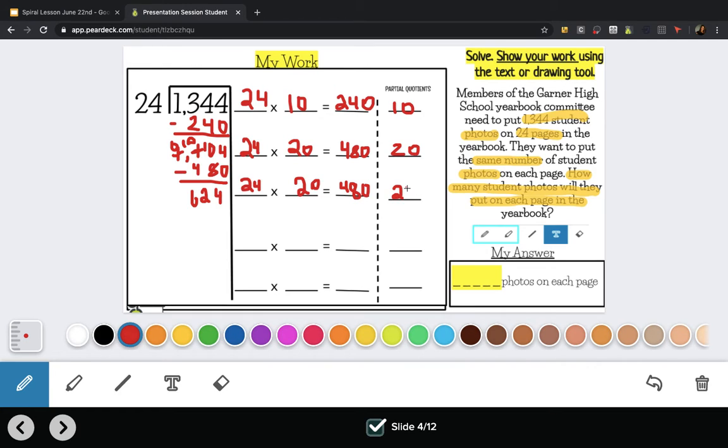Now that's another 480 photos. I'm gonna take that away from my 624. Let's see how many photos that leaves me with. Again I can't take 80 photos away from 20 photos, I need to regroup. Now I have 144 photos left.